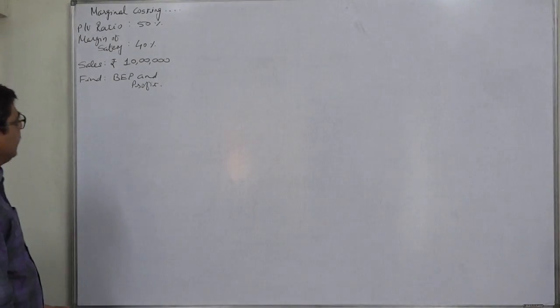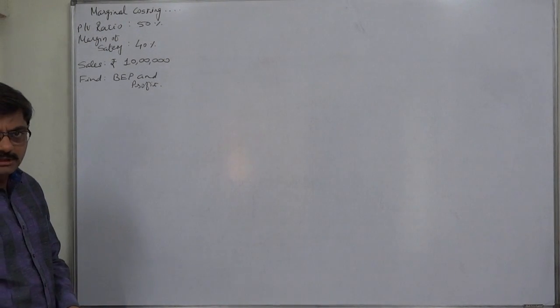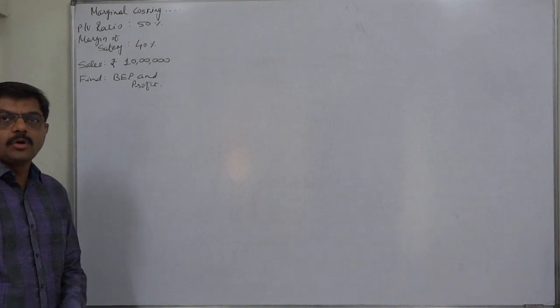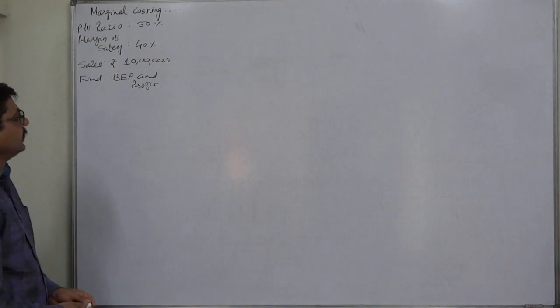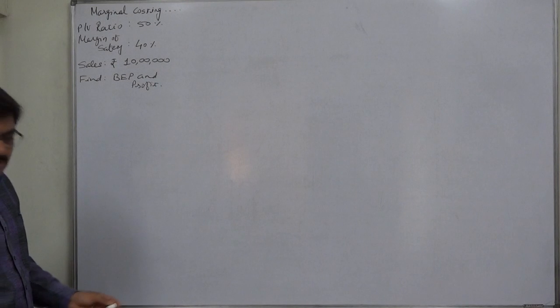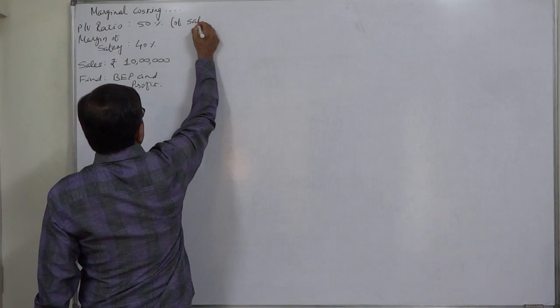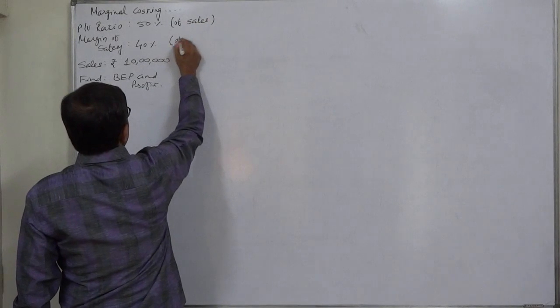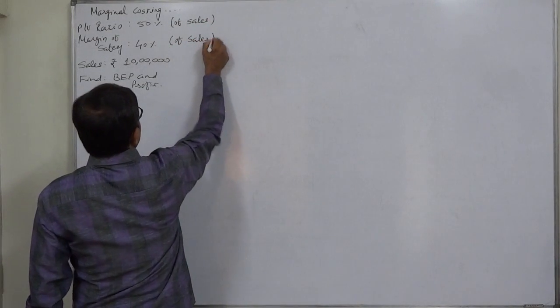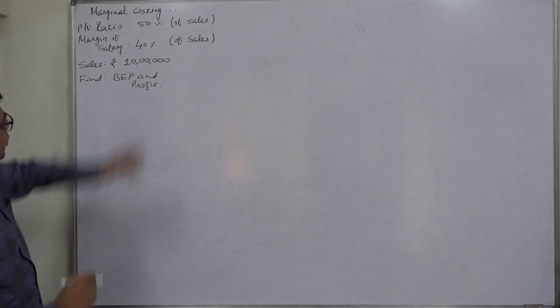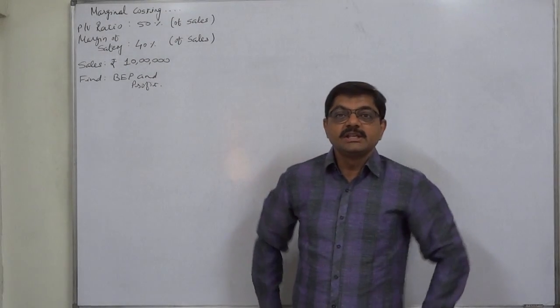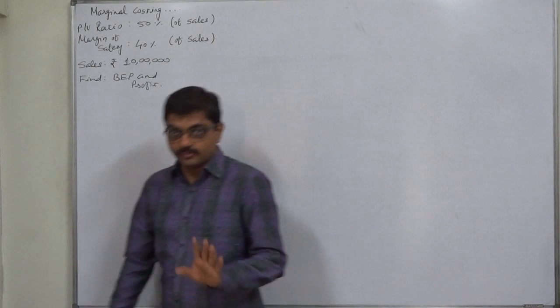Anything expressed as percentage, particularly in marginal costing or many times in financial management or even management accounting, anything expressed as percentage means percentage of sales. That is to be understood. PV ratio 50% of sales means the contribution margin is exactly 50% of sales.